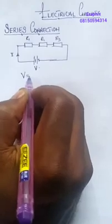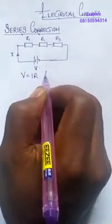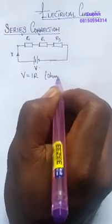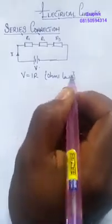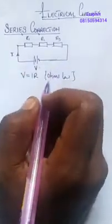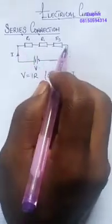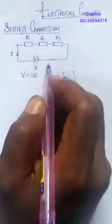According to Ohm's Law, it says that V is equal to IR. So what we usually consider in a series connection is that we are always looking for the voltage. Because we know that the voltage in a series connection is not the same, but the current throughout the connection is the same.